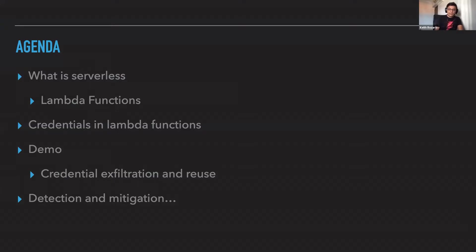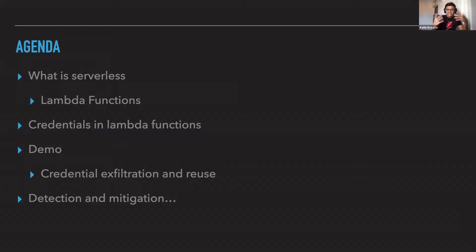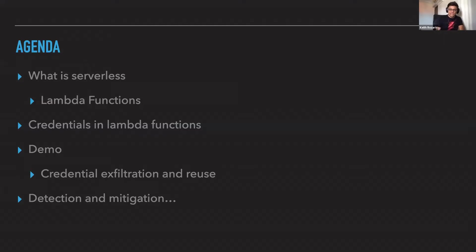Lambda functions are the functions as a service — the compute aspect of serverless offered by AWS. AWS has Lambda, one of the first functions as a service. If you're doing GCP, that's Google Cloud Functions or Google Cloud Run. On Azure there's Azure Functions. There's also Cloudflare workers, and I think even Tencent has their own stuff. Today's talk is going to be very AWS specific, but there are some elements you can use in other places as well.